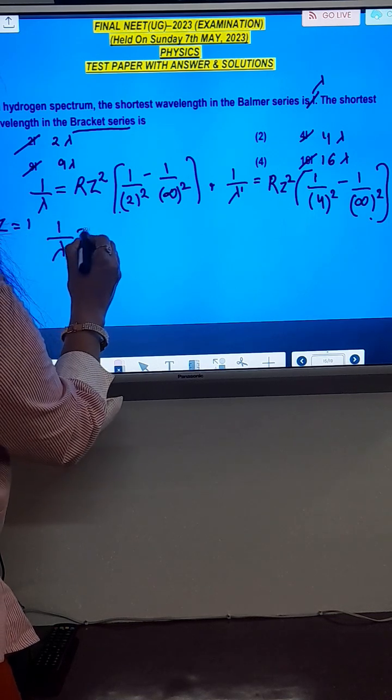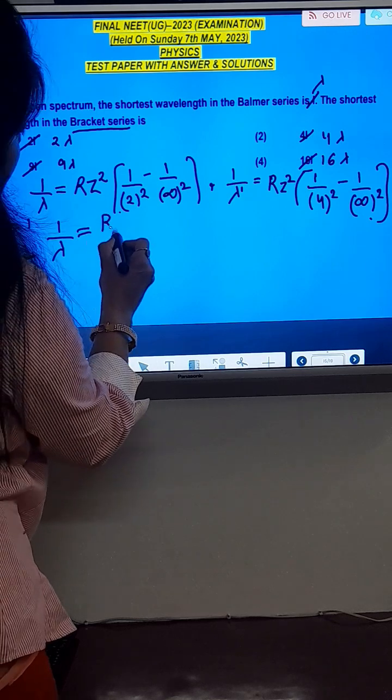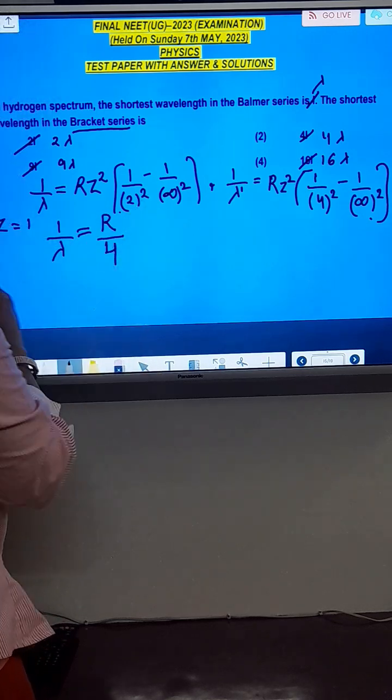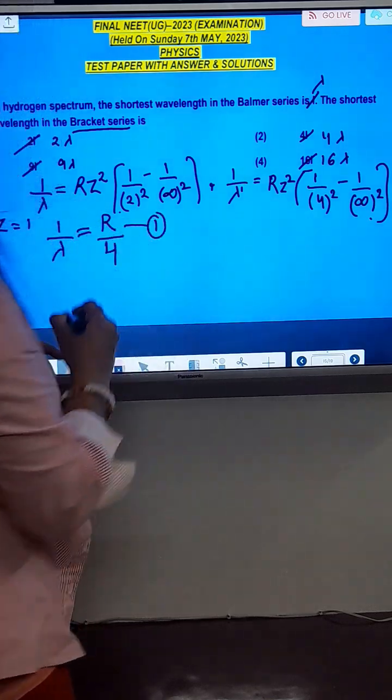So the first equation becomes 1 upon lambda equals R upon 2 to the 4. From here, this is the first equation.